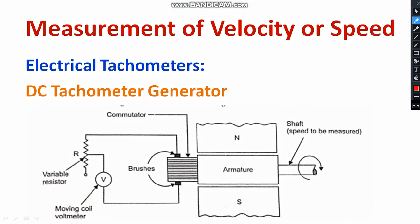As you can see in the diagram, we have two permanent magnets — north pole and south pole. In between, you can see an armature, which is a conductor. The armature is directly coupled with the shaft of a mechanical object and is rotating in the clockwise direction. There is a commutator and brush arrangement like a DC generator. The output of the brush is directly connected to a moving coil voltmeter with a series current-limiting resistor to protect the voltmeter.